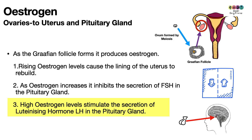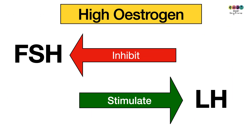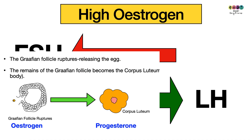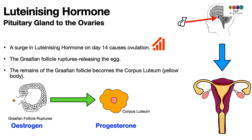High estrogen levels will eventually stimulate the secretion of Luteinizing Hormone in the pituitary gland. You can draw a small diagram to remind yourself that high estrogen inhibits the secretion of Follicle Stimulating Hormone but stimulates the secretion of Luteinizing Hormone — both produced in the pituitary gland.